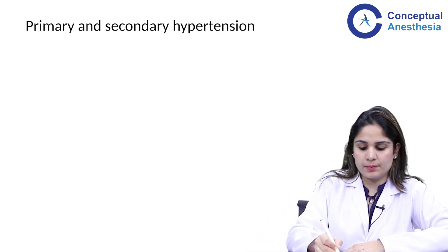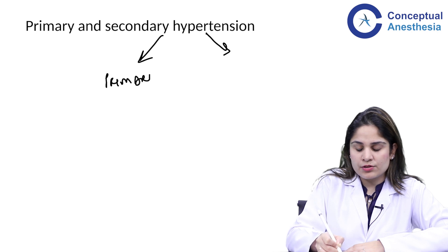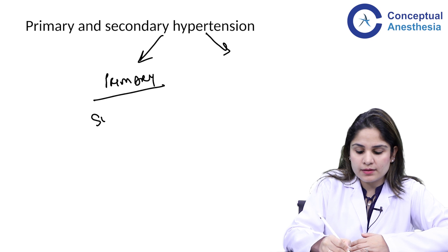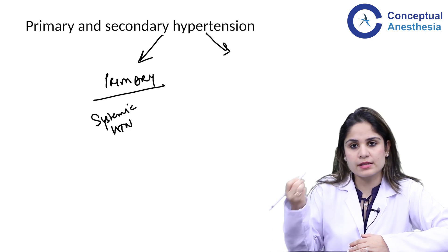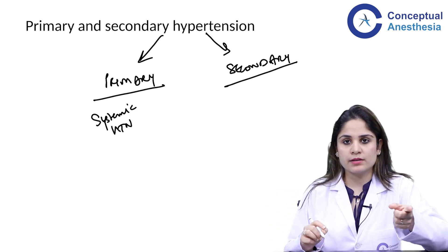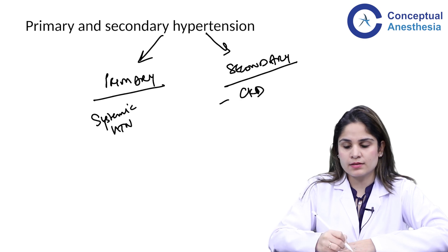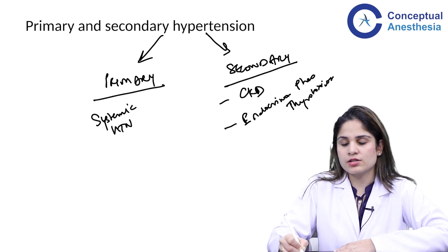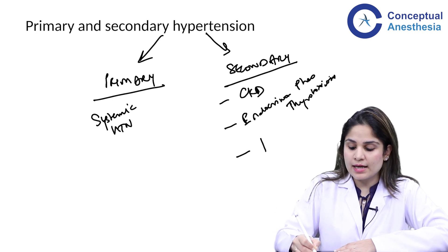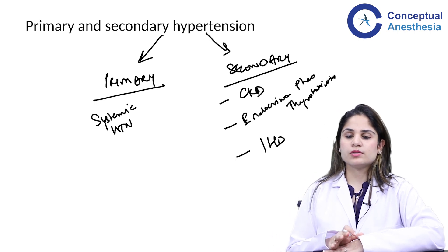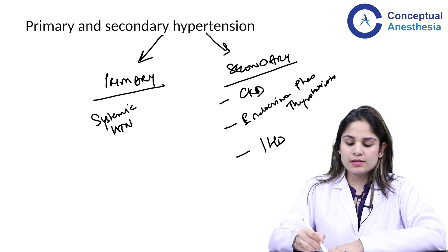What is primary hypertension versus secondary hypertension? Primary hypertension means that as a result of changes happening in the body along with old age — arteriosclerosis — you develop systemic hypertension; the problem is in the blood vessels itself. Secondary hypertension means there is some organ dysfunction leading to blood pressure as an add-on. For example, chronic kidney disease, endocrinological disease such as pheochromocytoma or thyrotoxicosis, or IHD with poor heart function and increased afterload — these are causes of secondary hypertension, where there is an underlying organic cause.